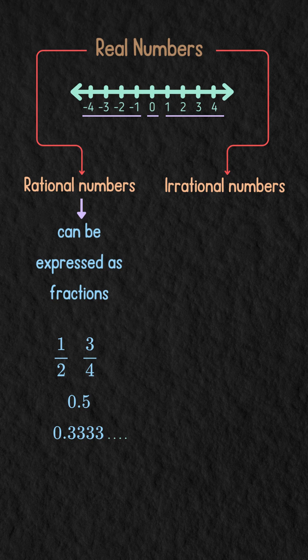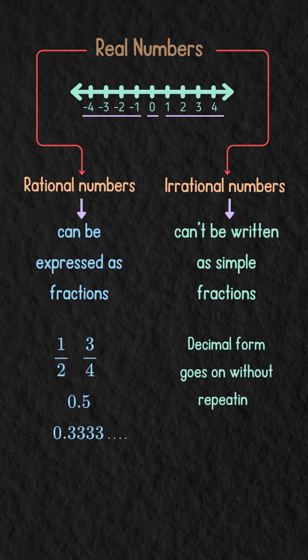On the other hand, irrational numbers can't be written as simple fractions. Their decimal form goes on forever without repeating, so they look like a random string of numbers going on forever.